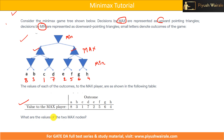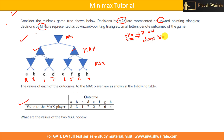We need to find out the values of the two max nodes. In the minimax algorithm, the min player will always try to minimize the score.